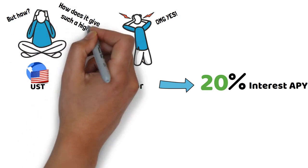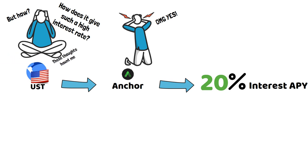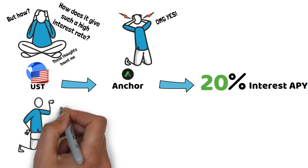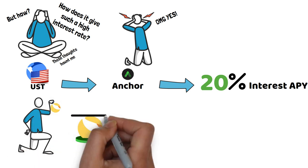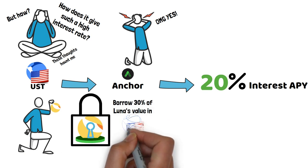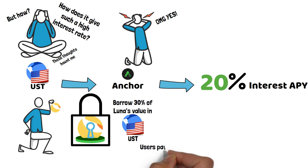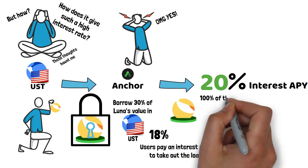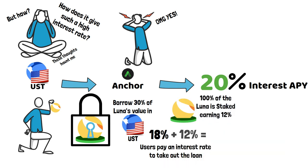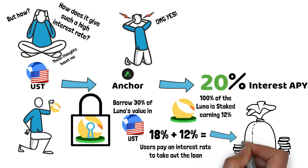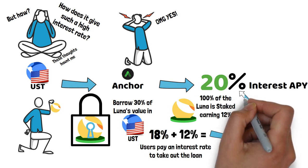It is able to give you such a high interest rate — and for this example I'm just going to use some rates to paint the picture — by letting users lock Luna and borrow 30% off its value in UST. You pay an interest rate on this, say around 18%. At the same time, 100% of that Luna is staked and the rewards for that Luna go into the Anchor Treasury to ensure it can keep that 20% interest rate.